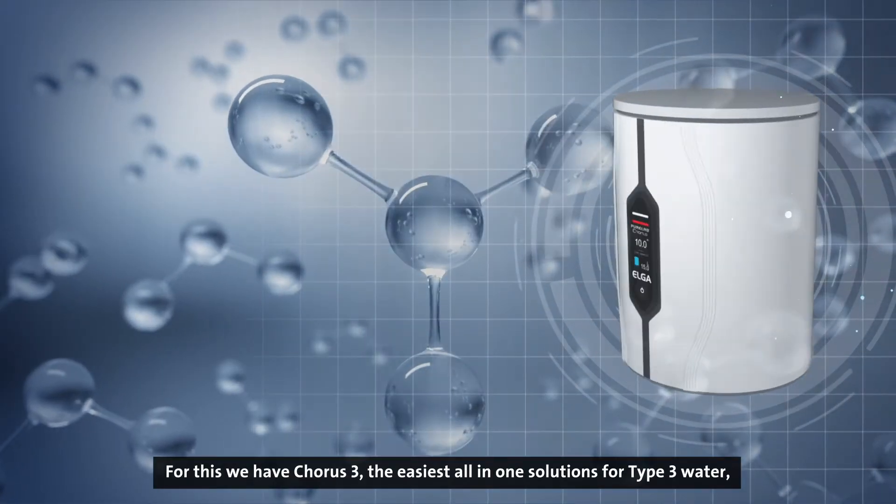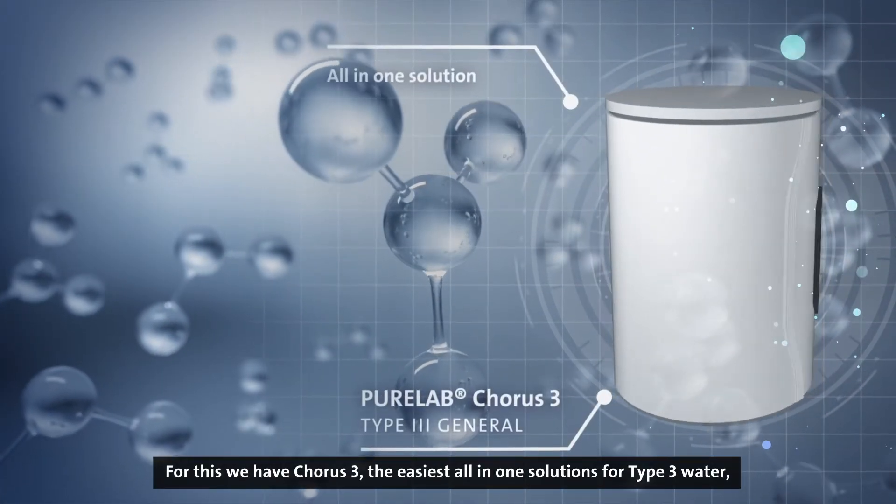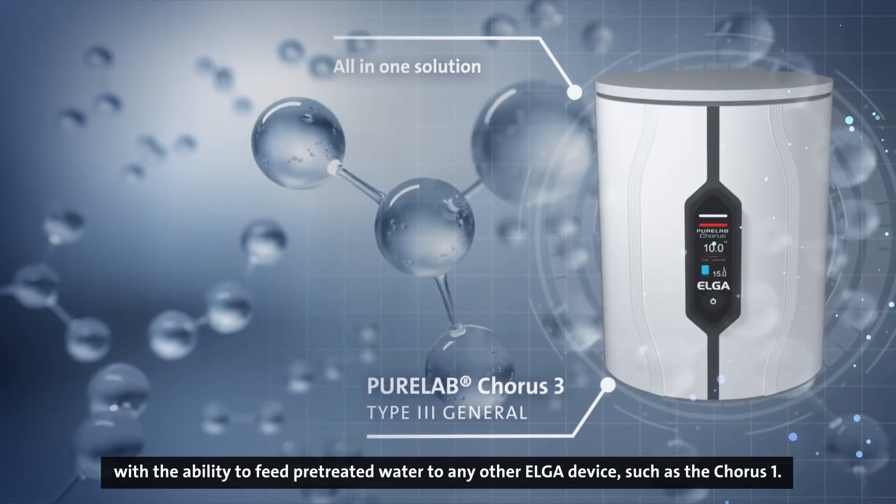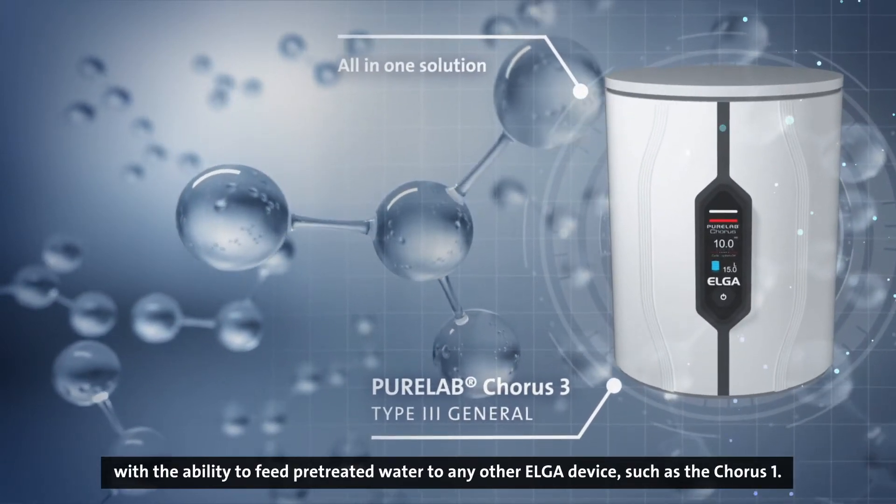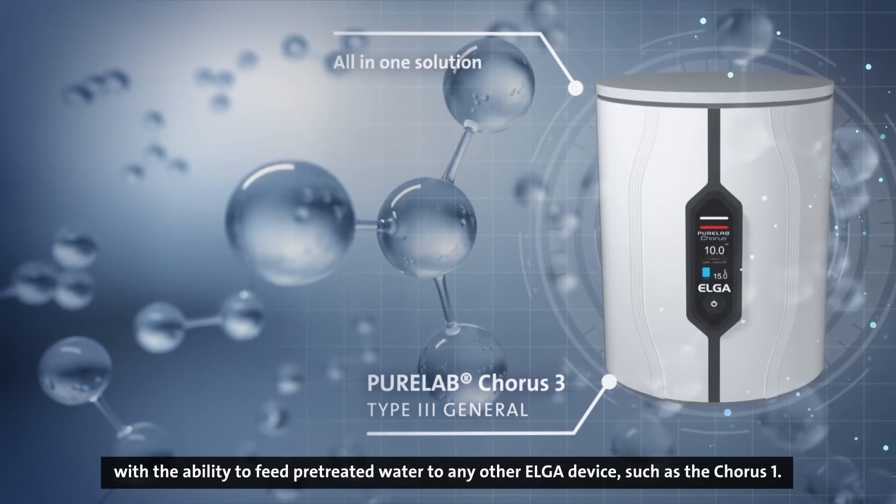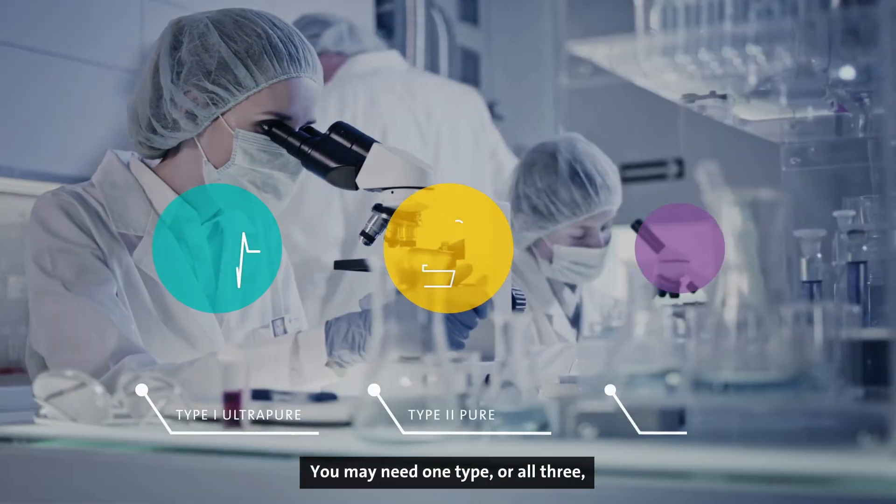For this we have Chorus 3, the easiest all-in-one solution for type 3 water with the ability to feed pre-treated water to any other Elga device such as the Chorus 1.